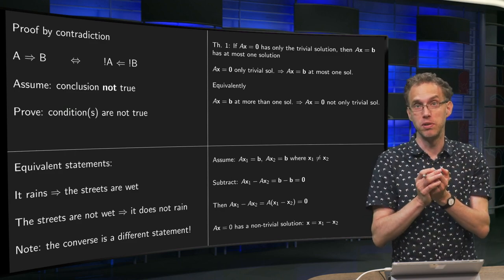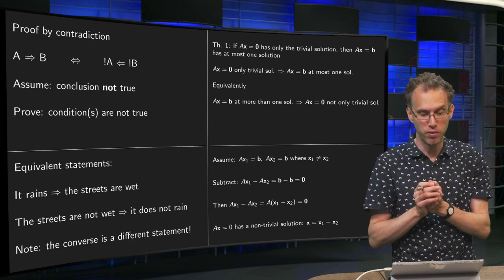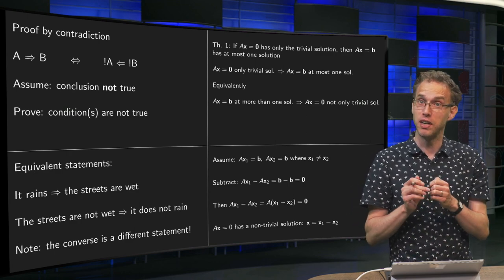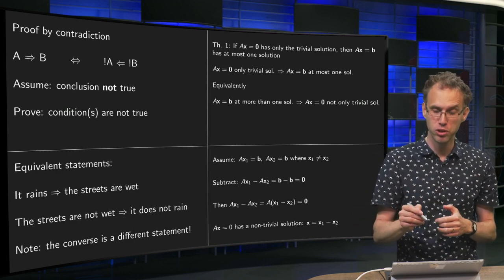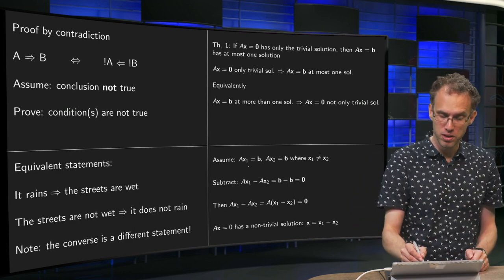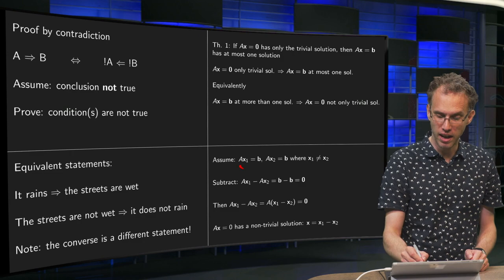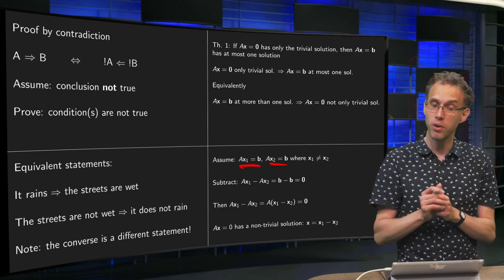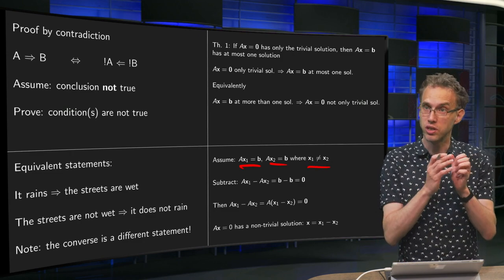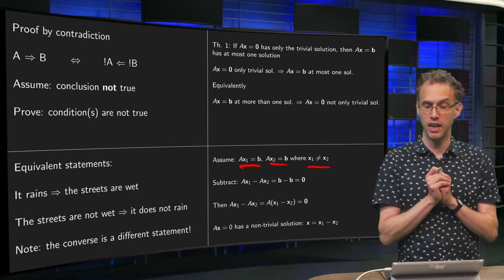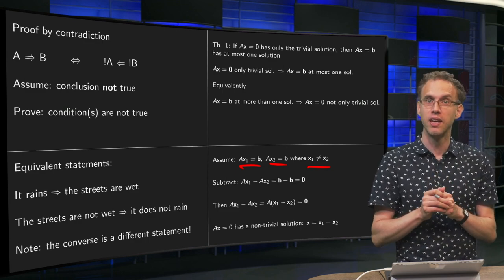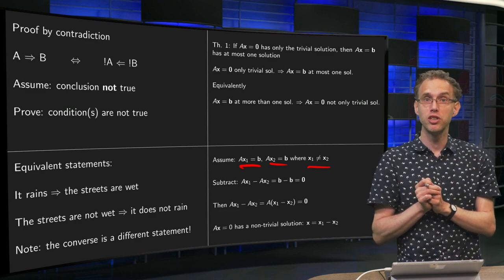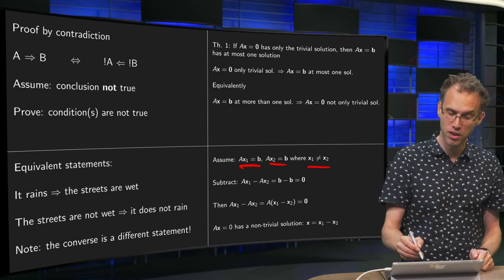We assume that the statement is not true, so we assume that Ax=b has more than one solution — for example, 2. So we assume that Ax₁=b and Ax₂=b as well, where x₁ is not equal to x₂. Now, how are we going to show that the conditions are not met? We do that as follows.